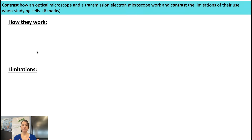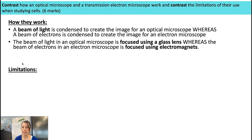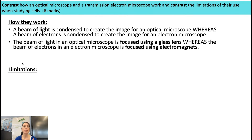The first thing I'd be doing in approaching this question is splitting my answer into those two different aspects: how they work, and the limitations. For how they work: a beam of light is condensed to create the image for an optical microscope, whereas a beam of electrons is condensed to create the image for an electron microscope. Second point: the beam of light in an optical microscope is focused using a glass lens, whereas the beam of electrons in an electron microscope is focused using electromagnets. In compare or contrast questions, you need to have both statements within that one sentence to get the mark.